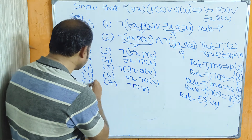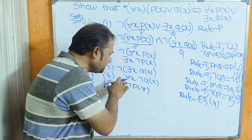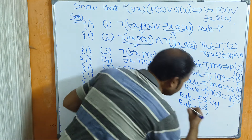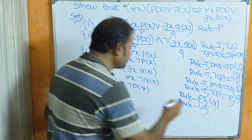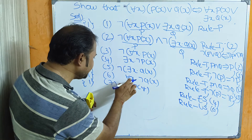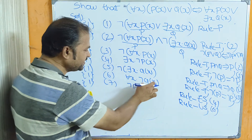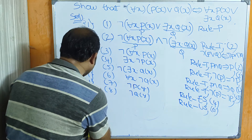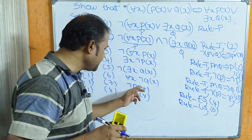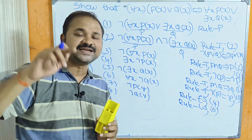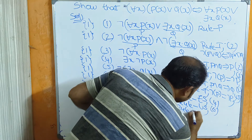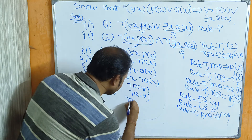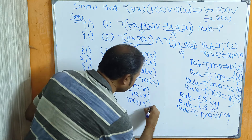To eliminate the universal quantifier in for all x negation Q(x), we apply rule US — universal specification — on statement formula 6, substituting variable y, giving negation Q(y) as statement formula 8. Now we have negation P(y) and negation Q(y), and using rule T — from P and Q implies P and Q — we combine them to get negation P(y) and negation Q(y) as statement formula 9.